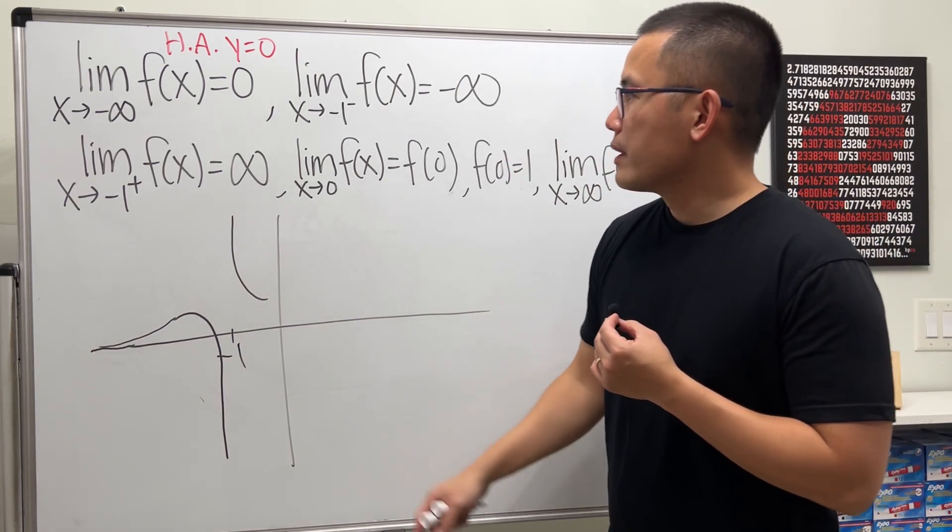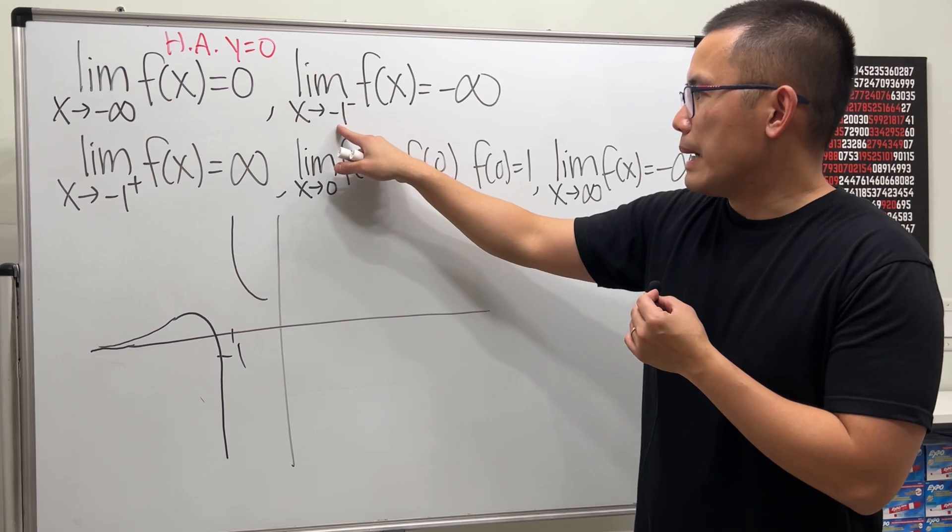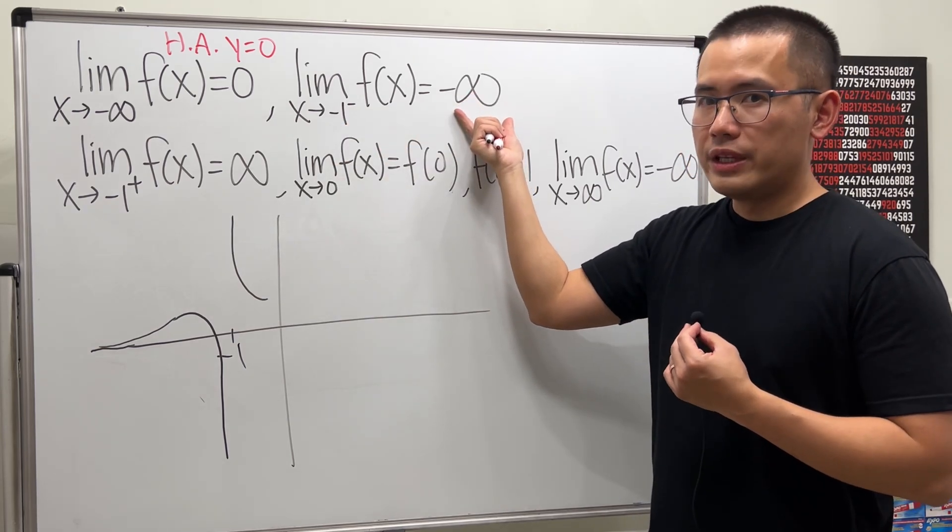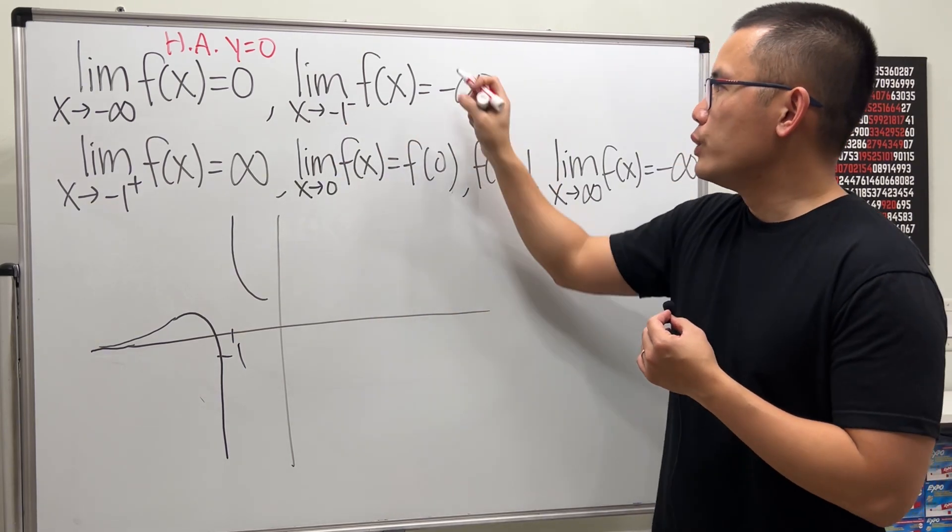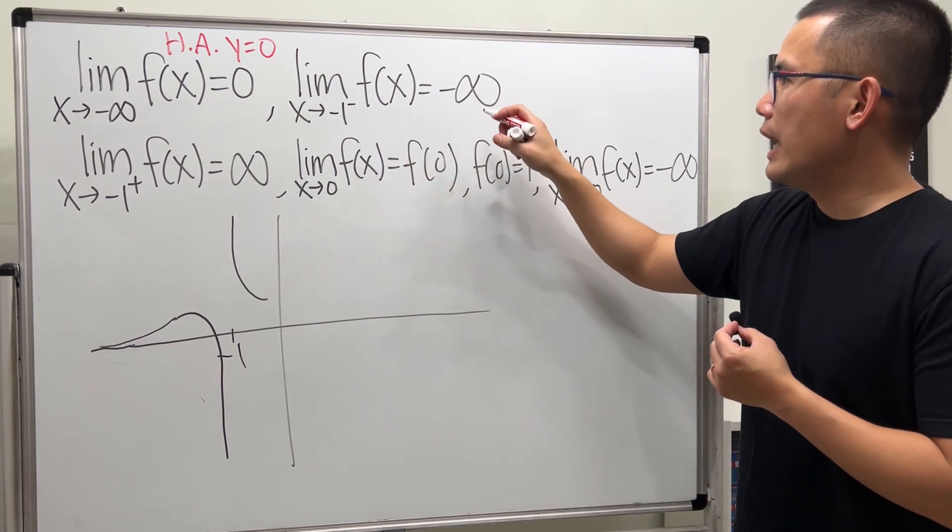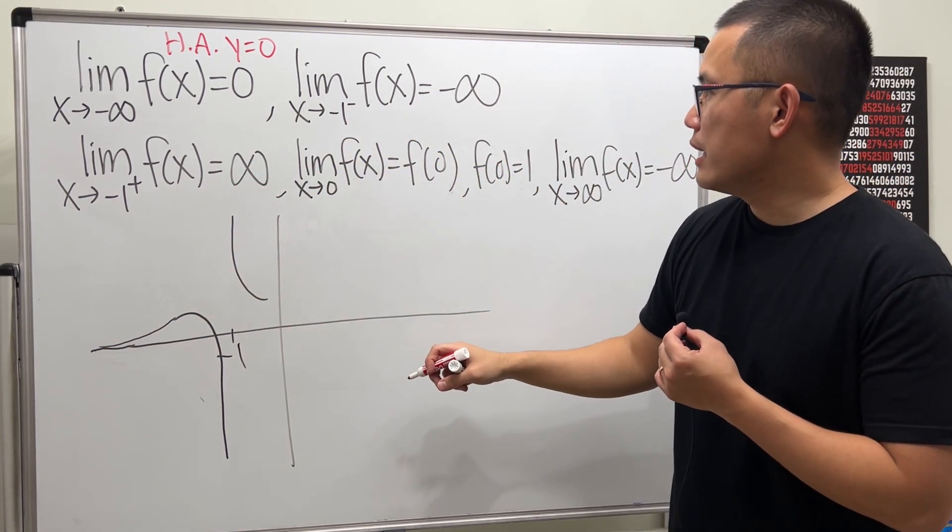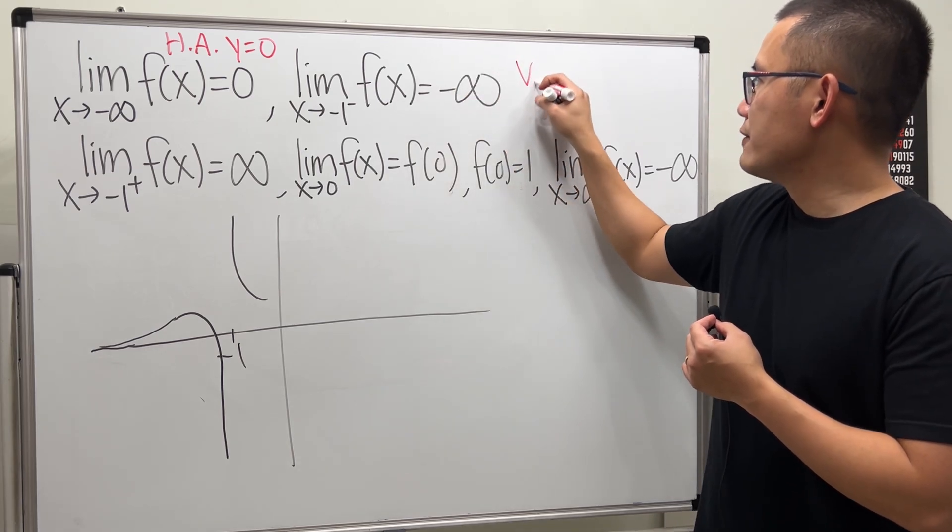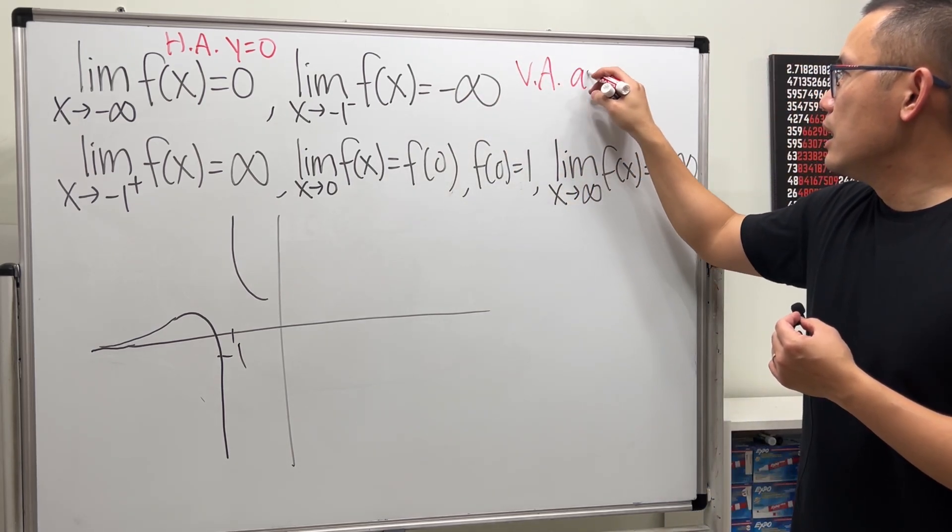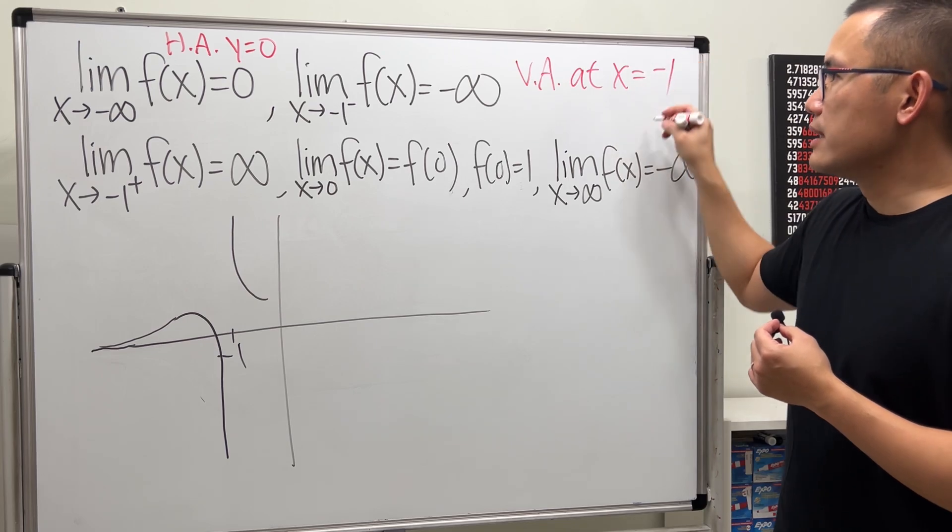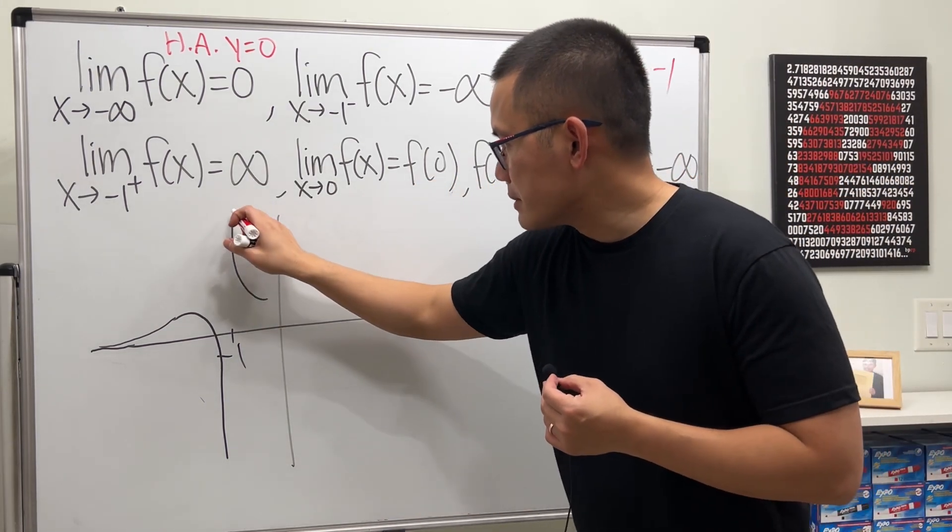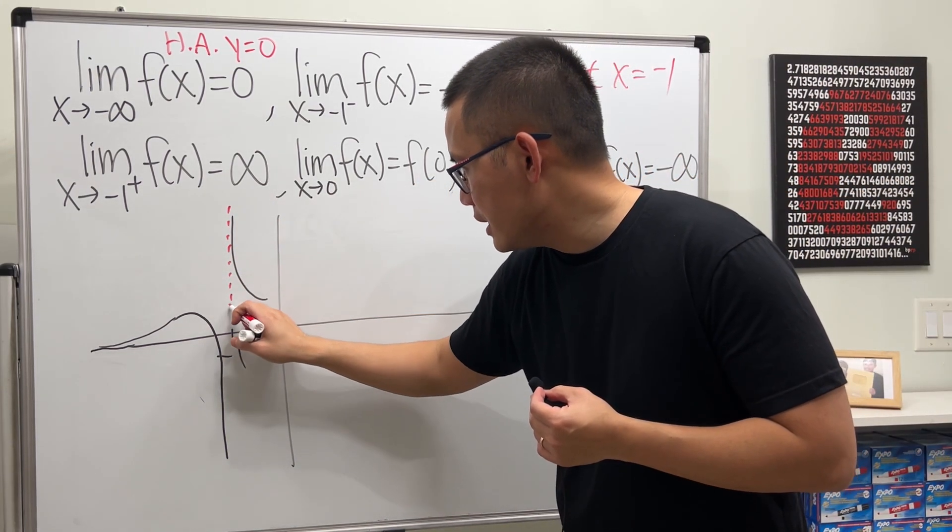Now here's the deal. When x is approaching a number, we get positive or negative infinity. That means we have a vertical asymptote at this number. So I will indicate that this tells us we have a VA at x equals negative 1. So perhaps let me indicate that right here.